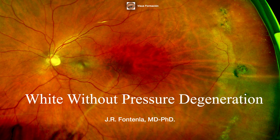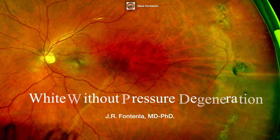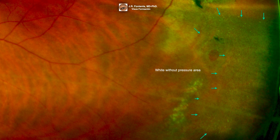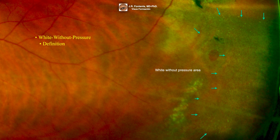In this video we are going to talk about a frequent type of peripheral retinal degeneration: white without pressure degeneration. Here we can see a white without pressure area. White without pressure is a distinctive white appearance of the peripheral retina without indentation and without mechanical stimulus.